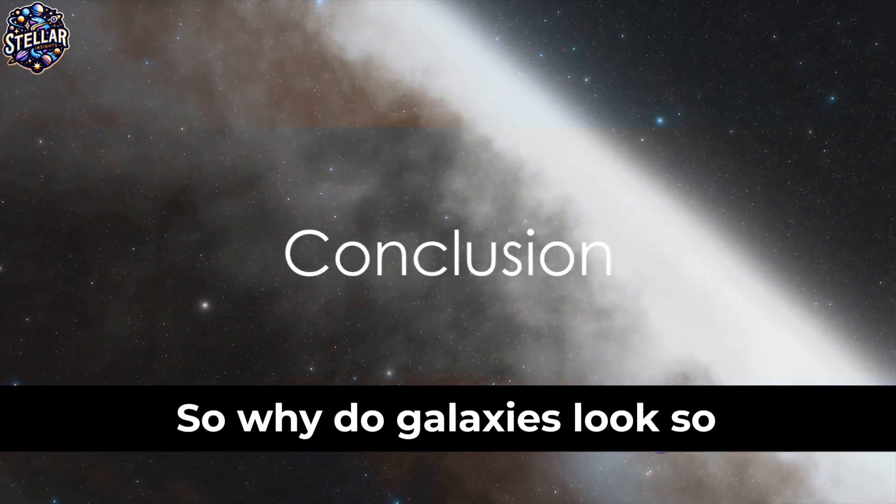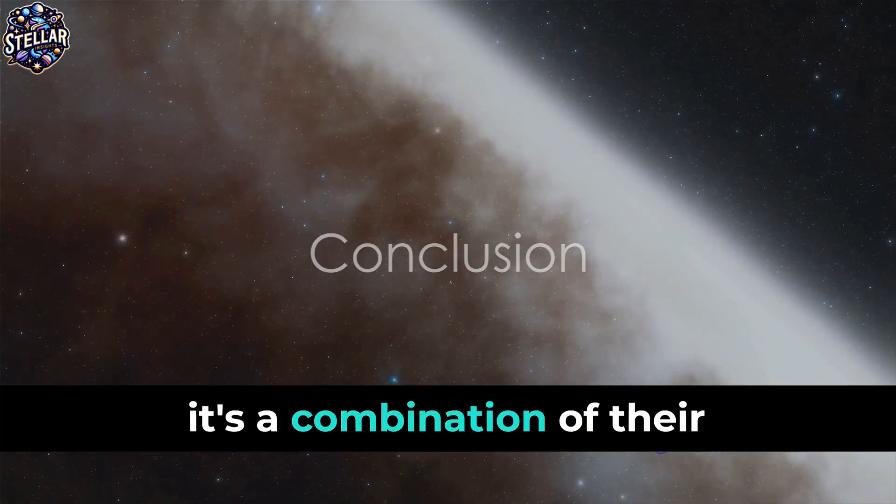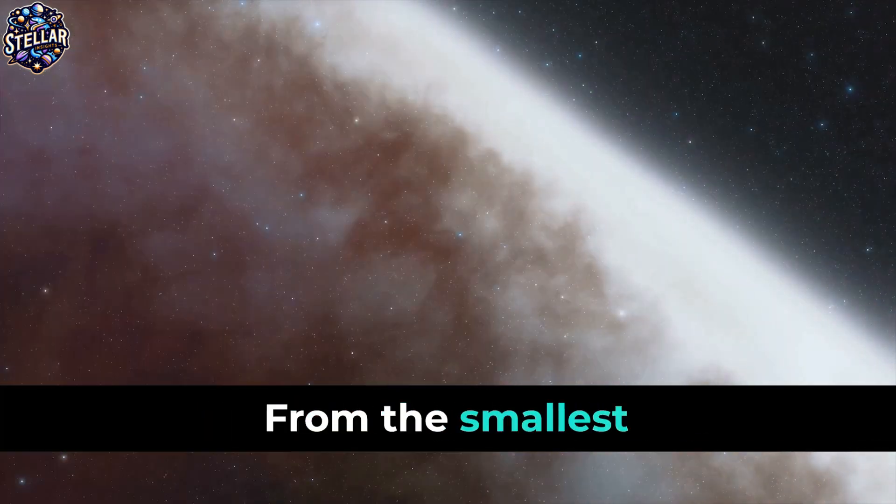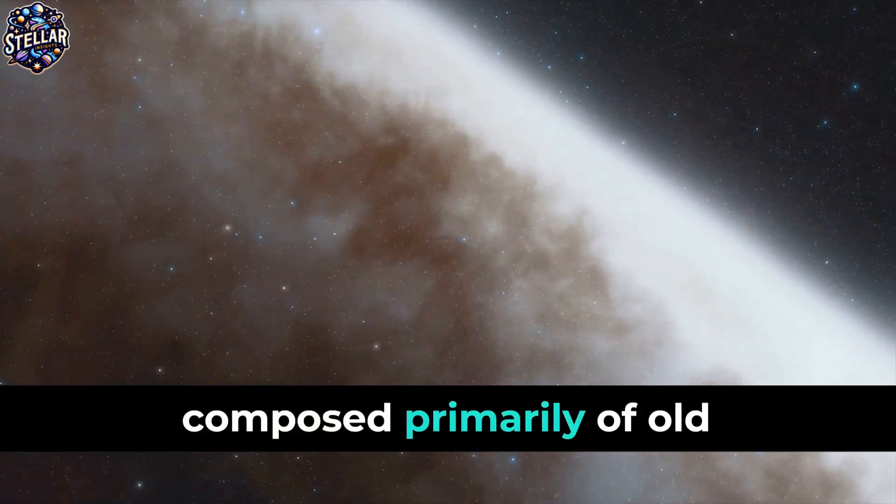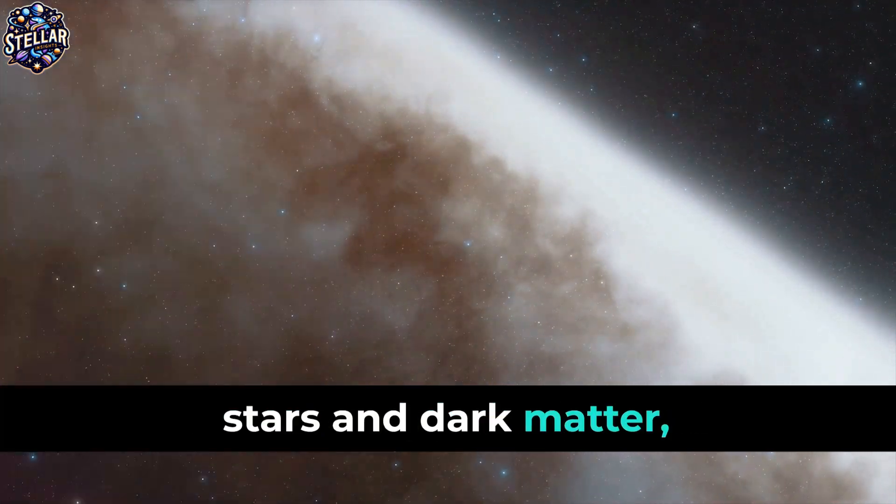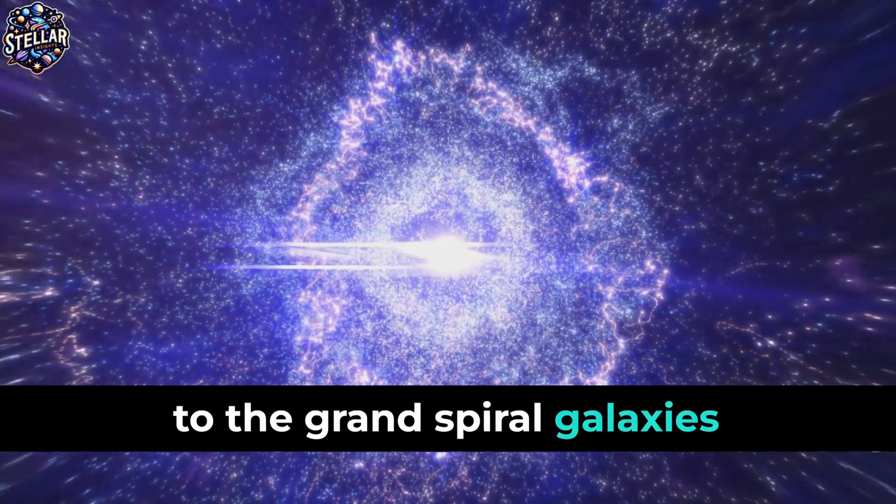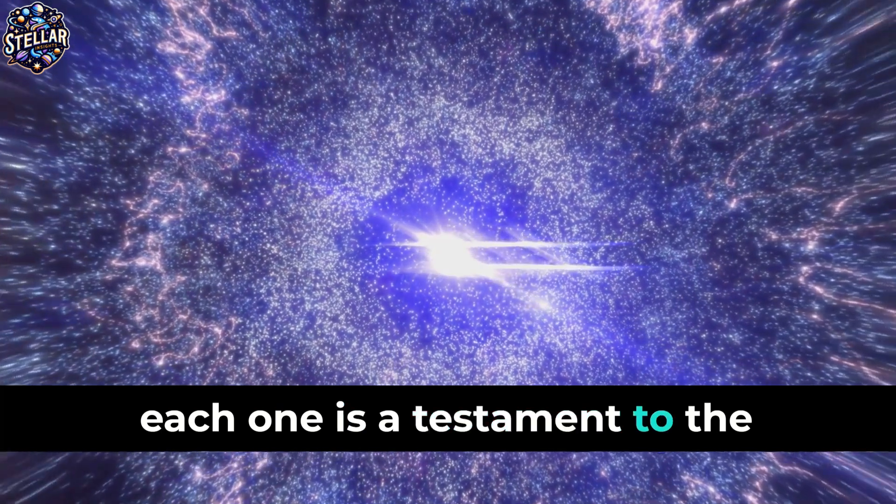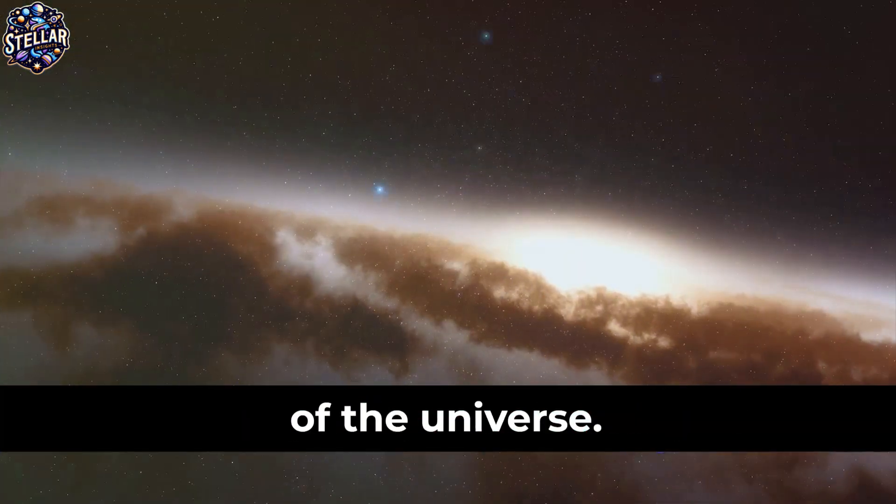So why do galaxies look so different? As we've seen, it's a combination of their building blocks, their evolutionary history and their type. From the smallest dwarf galaxies, composed primarily of old stars and dark matter, to the grand spiral galaxies with their youthful, vibrant star-forming regions, each one is a testament to the complexity and diversity of the universe.